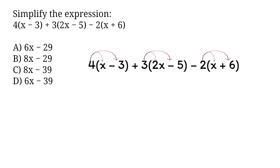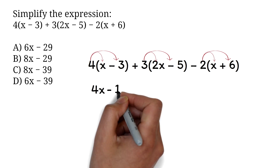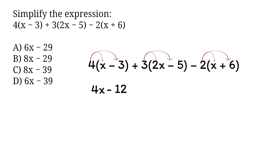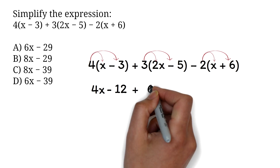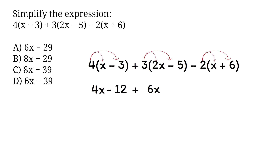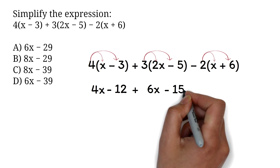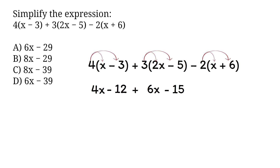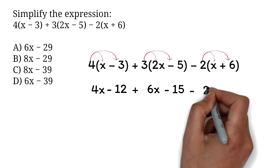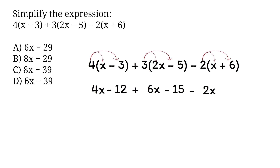For the first part, we have 4 times x, which is 4x. Then 4 times negative 3, which is minus 12. For the second part, 3 times 2x is 6x, and 3 times negative 5 is minus 15. For the last part, negative 2 times x is minus 2x, and negative 2 times 6 is negative 12.